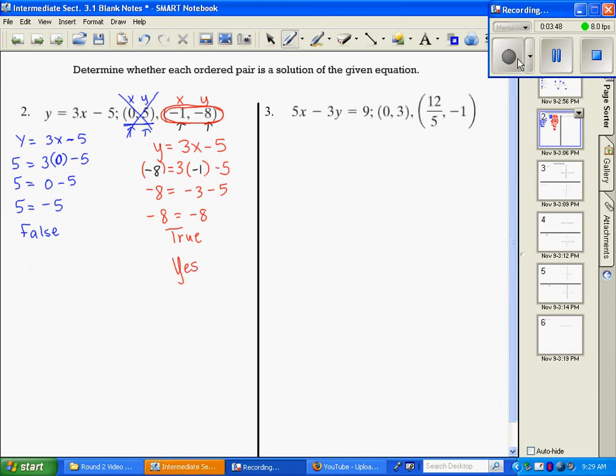And we said number 1 since it was false, no, it is not a solution. All right, we're going to do the same thing with number 3. We're going to substitute those values in. So if I have 5x - 3y = 9, I'm going to attempt this first ordered pair. So I'm going to put 0 in for x, I'm going to put 3 in for y and solve. So it's going to be 0 - 9 = 9. -9 = 9. That is going to be false.